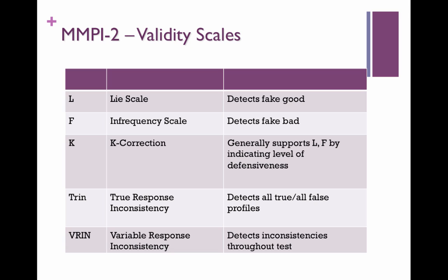The K scale is a correction scale. It generally supports the L and the F scale and tells you a little bit about how defensive someone was when they approached the test. In graduate school you'll learn to interpret the patterns together — is it an inverted V? Is it a V? Is it a check mark? There are patterns here that you learn to interpret.